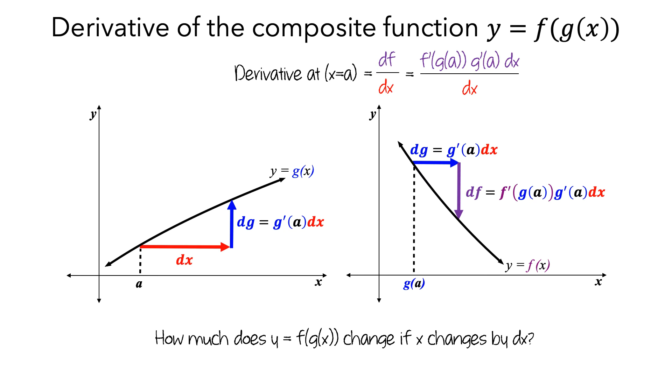Since the dx is in both the numerator and the denominator of this expression, we can cancel this amount, which shows that the derivative of the composite function can be written as the product of the derivative of f evaluated at g(a), and the derivative of g evaluated at a. This gives us the chain rule for differentiation.